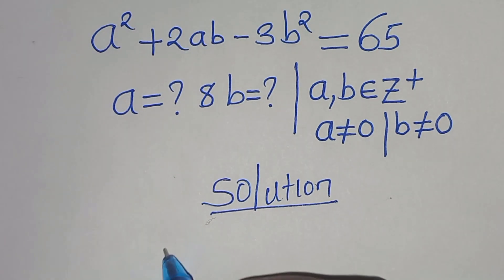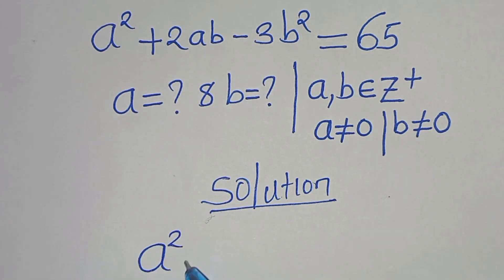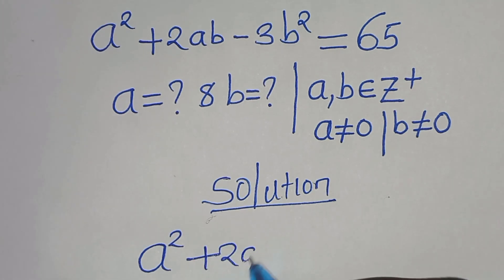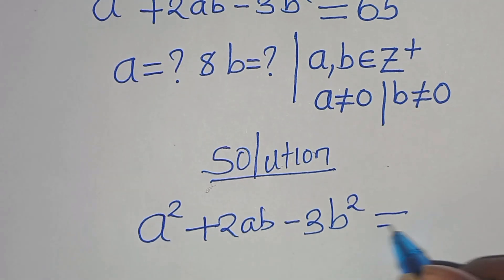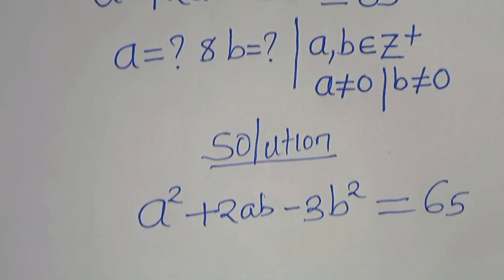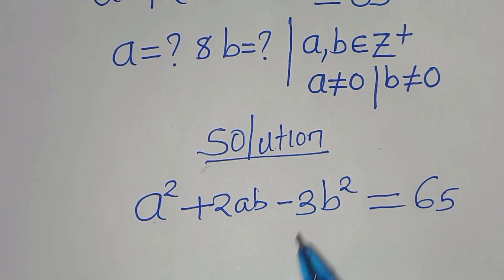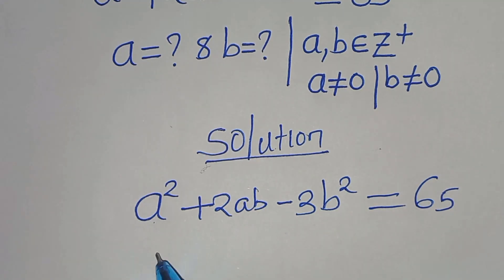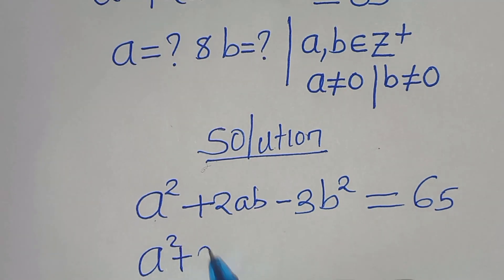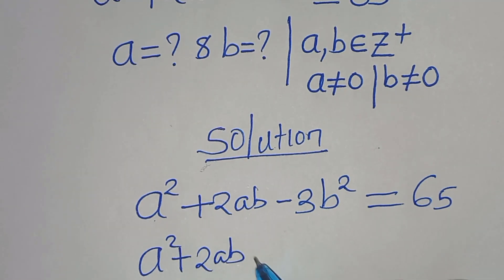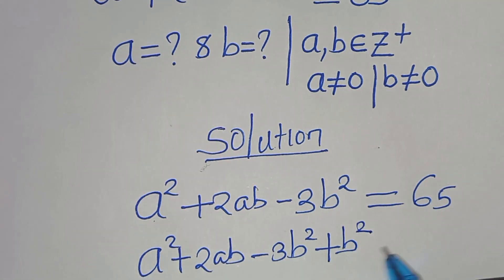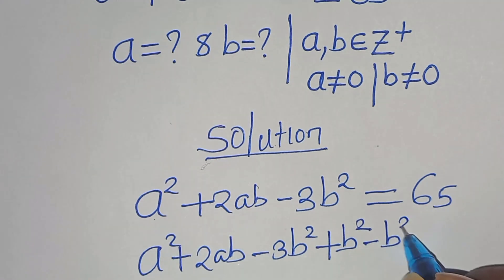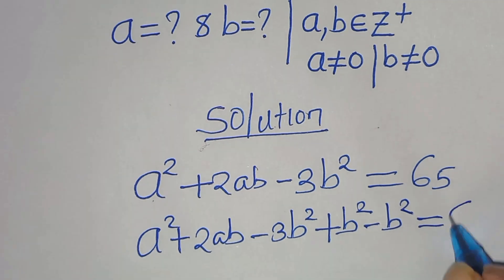We have a squared plus 2ab minus 3b squared, equal to 65. To form an algebraic equation here, we add b squared minus b squared, which does not alter the equation, so this is still equal to 65.